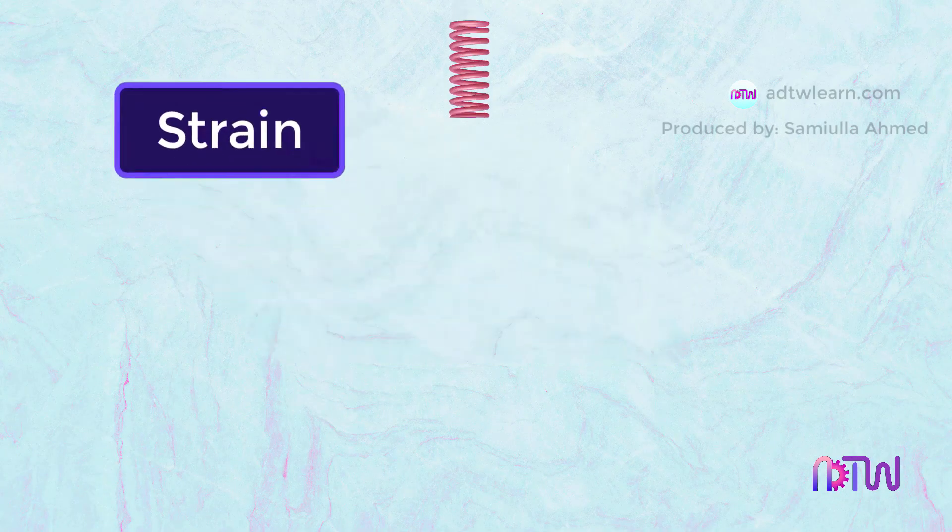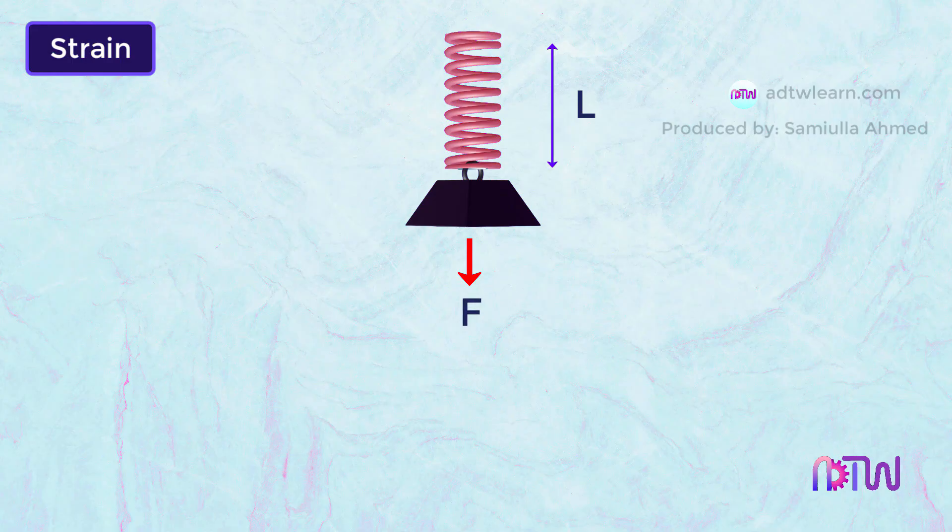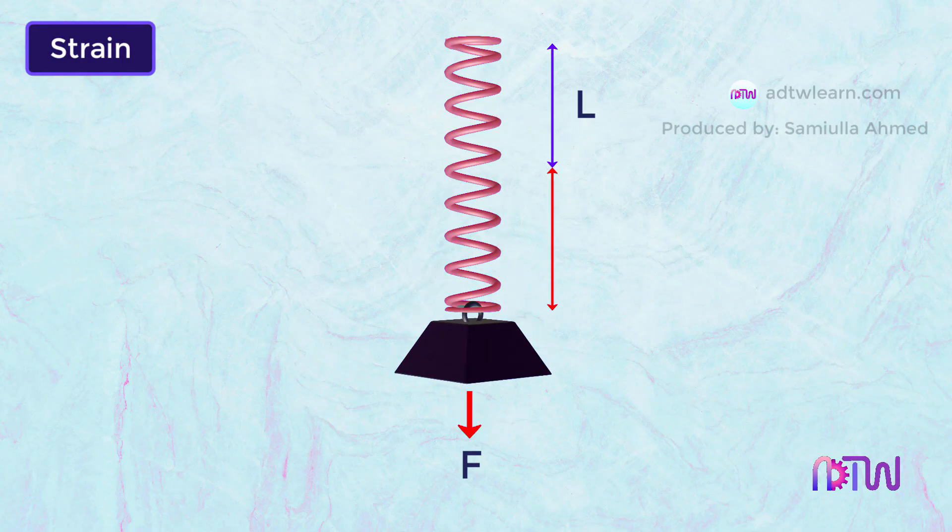And what is a strain? Consider a spring fixed on one end and having length L. When we apply a force F on the other end of the spring, its length changes. We will denote this elongation of spring as delta L.